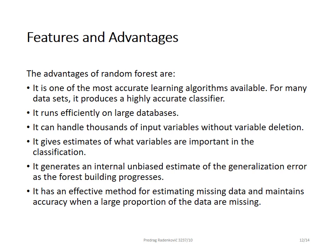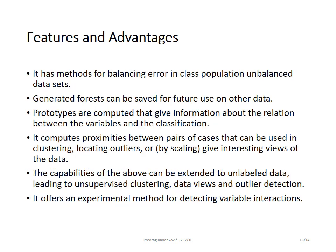It gives an estimate of what variables are important in classification. It generates an internal unbiased estimate of generalization error as the forest building progresses. It has an efficient method for estimating missing data and maintains accuracy when a large proportion of data is missing. It has methods for balancing error in class-population unbalanced datasets, and the generated forest can be saved for future use on another dataset — once you have generated the Random Forest model, it can be reused on future data.